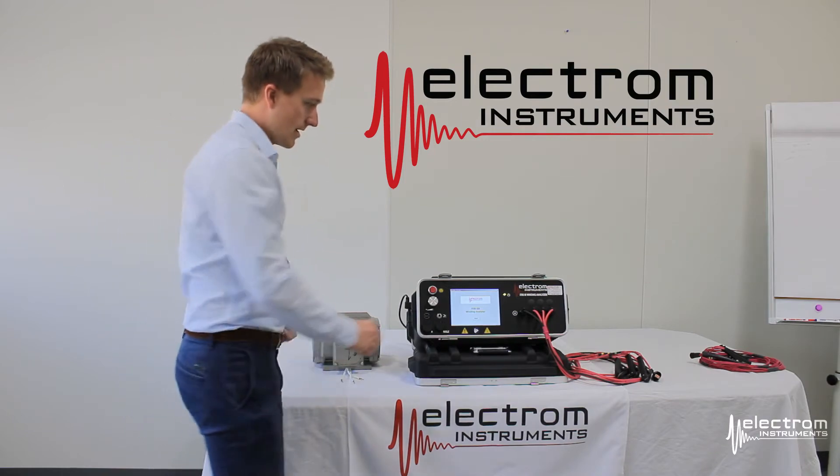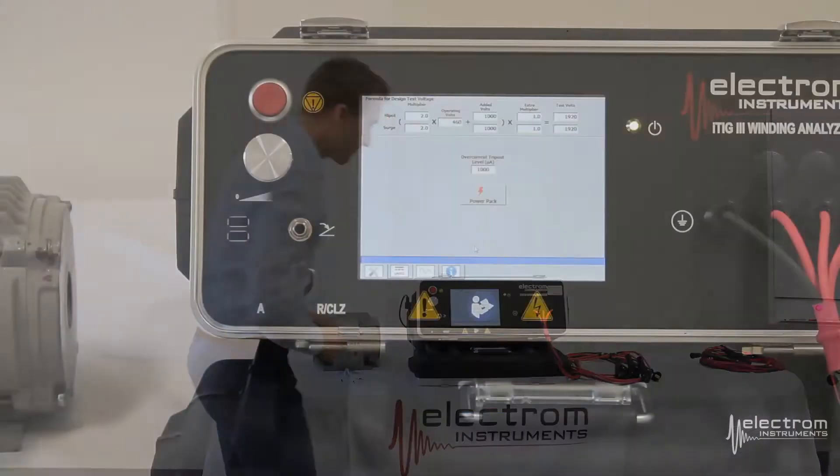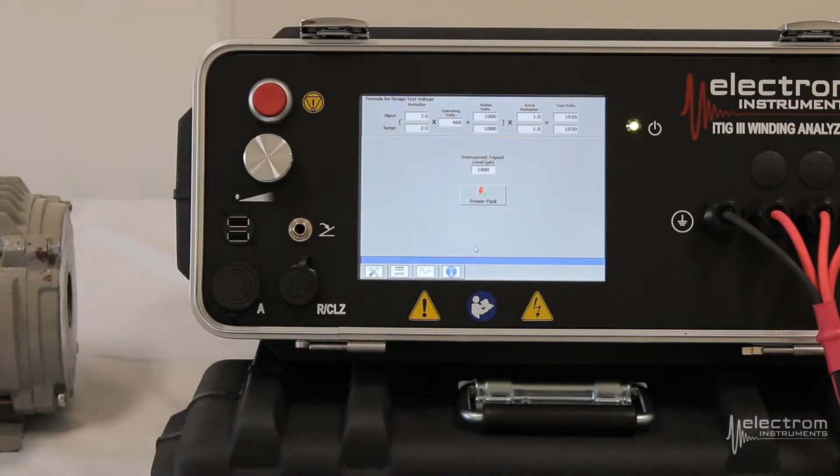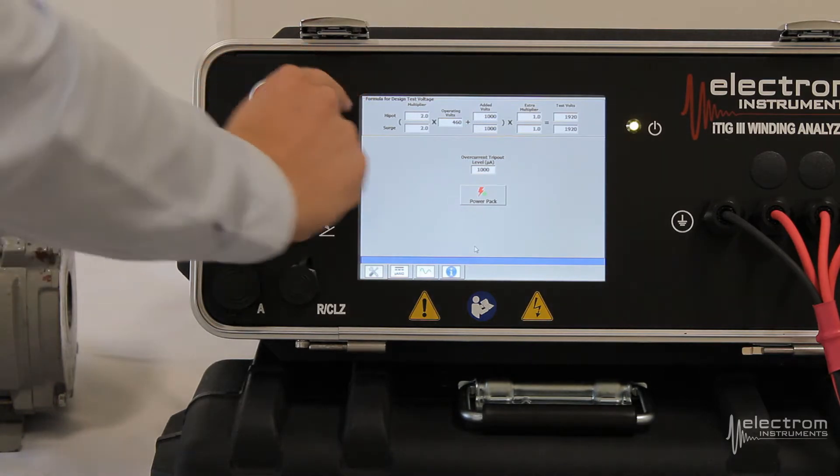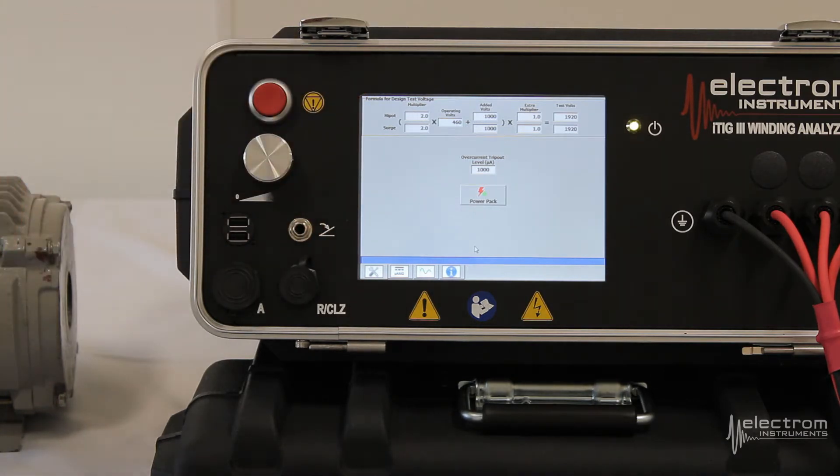To get started you click start. We get to our setup screen. We have the high pot and surge test voltage formulas. The instrument will default to 2 times the operating voltage plus 1000.